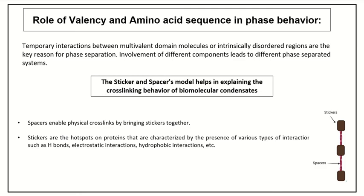Coming to our first question, which is the role of valency and amino acid sequence in phase behavior. Valency plays a crucial role in determining phase behavior. At the molecular level, temporary interactions between multivalent domain molecules or intrinsically disordered regions are the key reason for phase separation. We can use the sticker and spacer analogy to describe how it works. The stickers are interlinked by spacers, and these stickers act like hotspots — they interact with other proteins via electrostatic, hydrophobic, and a few other interactions.